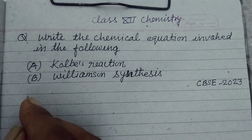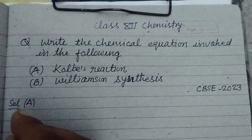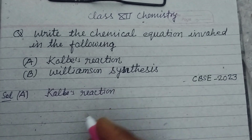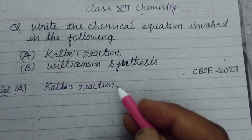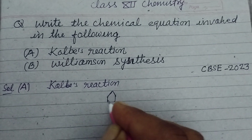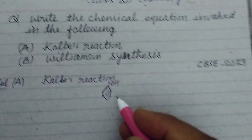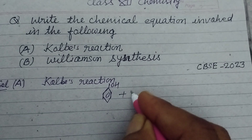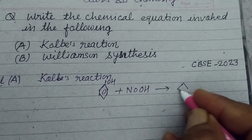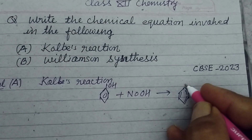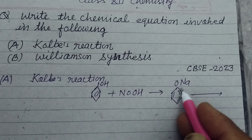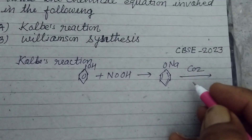So first we consider here the Kolbe reaction. The Kolbe reaction or process is a carboxylation chemical reaction that proceeds by treating phenol with sodium hydroxide to form sodium phenoxide. So it gives sodium phenoxide.